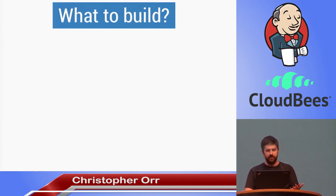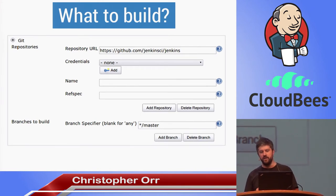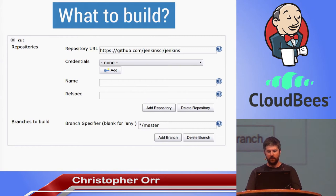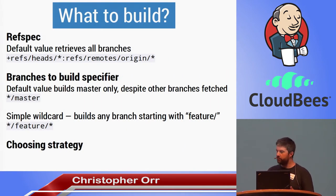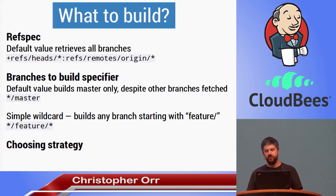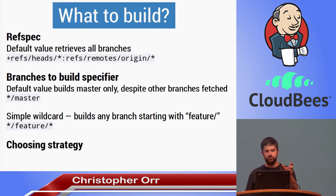The first question with Git is what to build. This is the most basic config you can have - I've expanded the advanced section to show the name and ref spec. Jenkins uses three different parameters to choose what to build: the ref spec, the branches to build, and the choosing strategy. By default, Jenkins will download all branches from the repository and only build master. You can also enter simple wildcards - like feature slash whatever if you're using Git flow, to only build branches that start with feature.